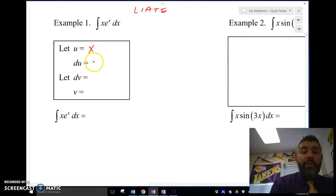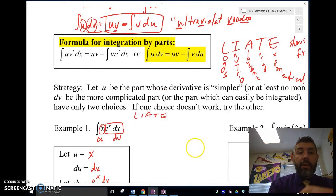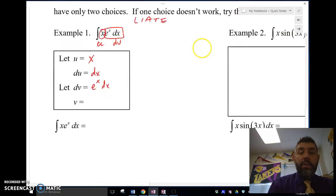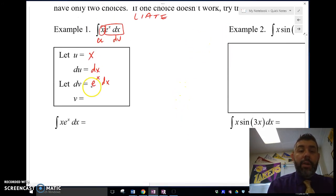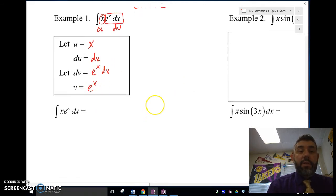Then we take the derivative of that, and the derivative of x is dx. So du equals dx. So dv is going to be my other one there. So dv is going to be e^x dx. So then I'm going to integrate e^x dx, and v is going to give me e^x.